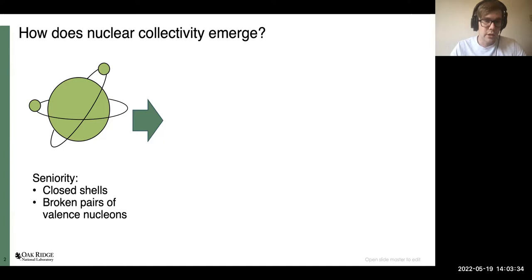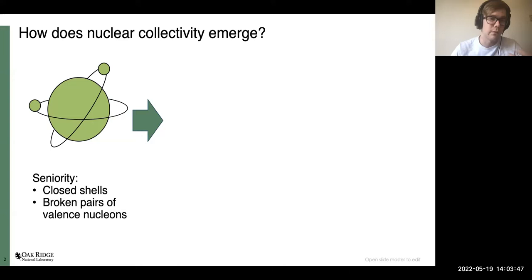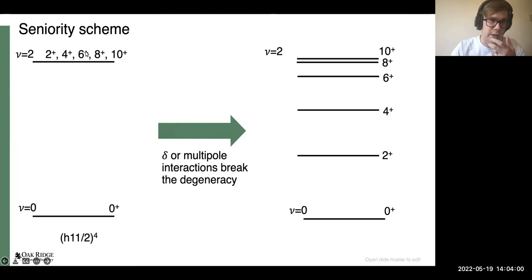Nuclei where we talk about seniority are usually on closed shells — at least semi-magic nuclei — where we're only talking about one kind of valence nucleon: either valence protons or valence neutrons. The way the scheme works is basically in terms of talking about broken pairs of valence nucleons.